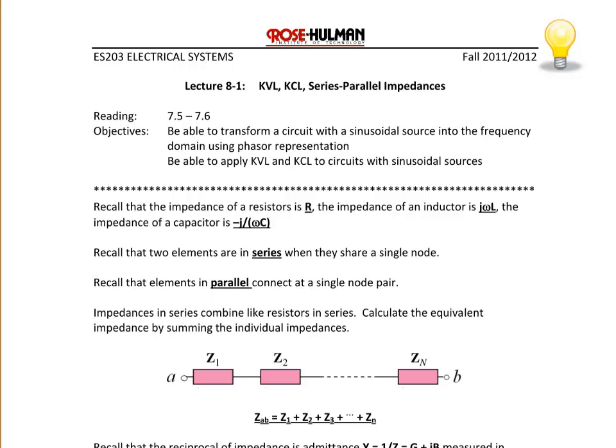Recall that the impedance of a resistor is R, the impedance of an inductor is jωL, and the impedance of a capacitor is -j over ωC. When two elements are in series, they share a single node. When two or more elements are in parallel, they share a single node pair.